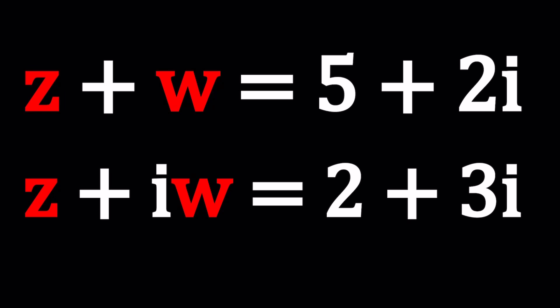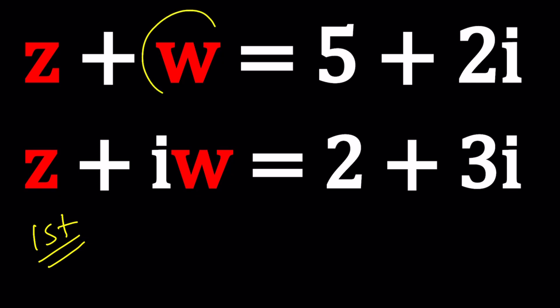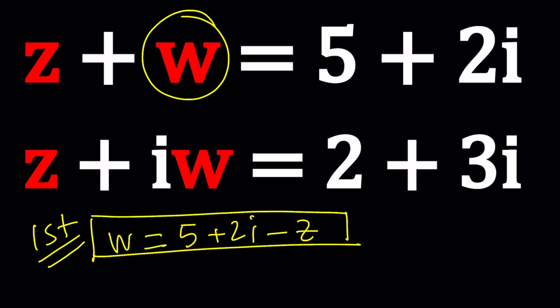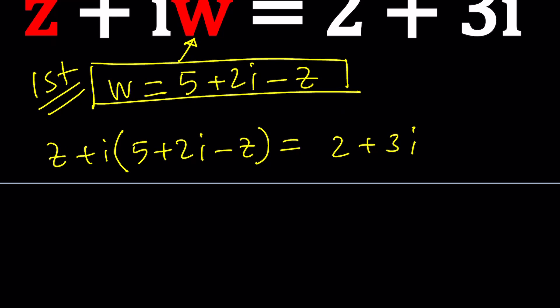Let's start with the first method. For my first method I want to use substitution and from the first equation I want to isolate w. If I isolate w I'm going to get 5 plus 2i minus z and then what I can do is I can go ahead and plug it in here. Now let's do it. z plus i times w which is 5 plus 2i minus z equals 2 plus 3i. So this is a very simple equation. You're going to be solving for z and it's linear so let's go and solve it.